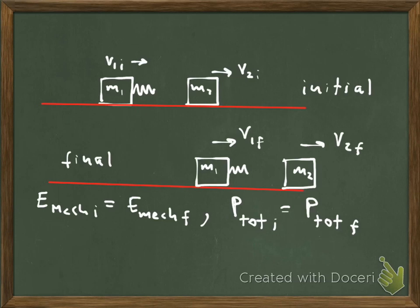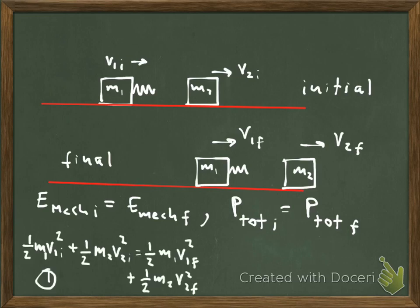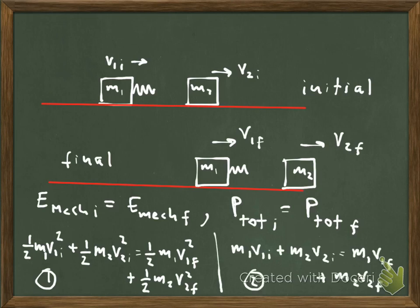We now have two equations for this elastic collision problem. Conservation of mechanical energy states that the kinetic energy of block one plus the kinetic energy of block two equals the final kinetic energies of both blocks. Conservation of momentum states that m1·v1-initial plus m2·v2-initial equals the final momentum of block one plus the final momentum of block two. With initial velocities given, we have two equations and two unknowns — the two final velocities.